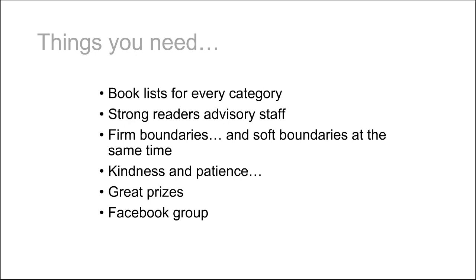Some important lessons learned: you need to have book lists for every single category, and you need really strong readers' advisory staff. Not only do they have the book lists, but staff get stopped and asked 'what is your favorite book about music' or 'what did you read for this category?' There are also firm boundaries and soft boundaries — they won't fudge on the date, but if you can justify putting a book in a category, they're good with that. The first year they made reading logs thinking only a few people would sign up, but ended up with over 1,000 — so they don't make printed reading logs anymore. It's also spreading around the country; they even have someone in Ireland who signed up.